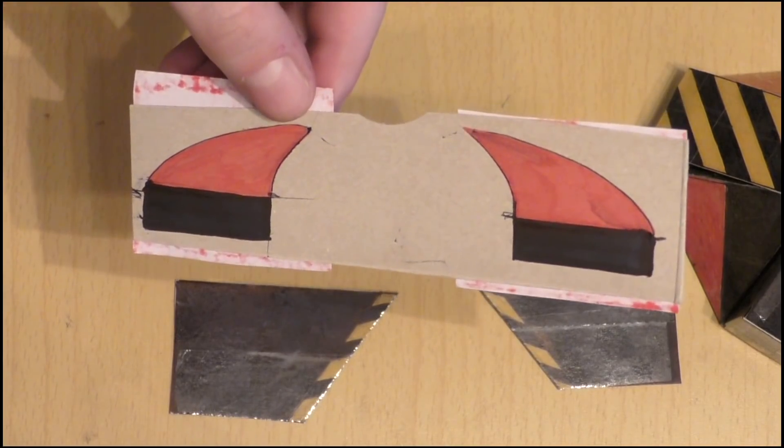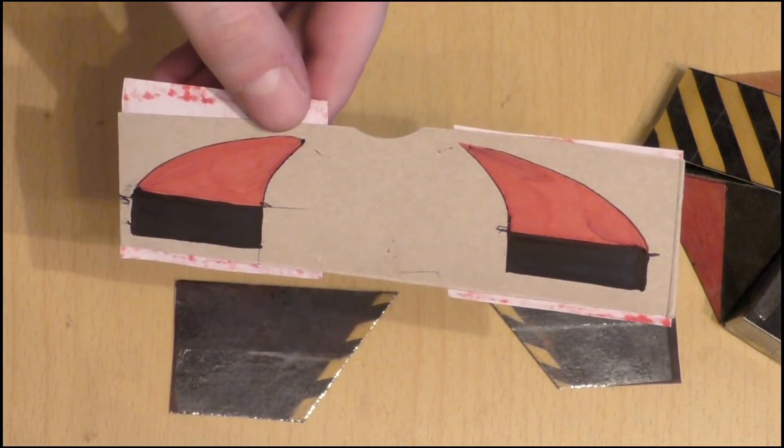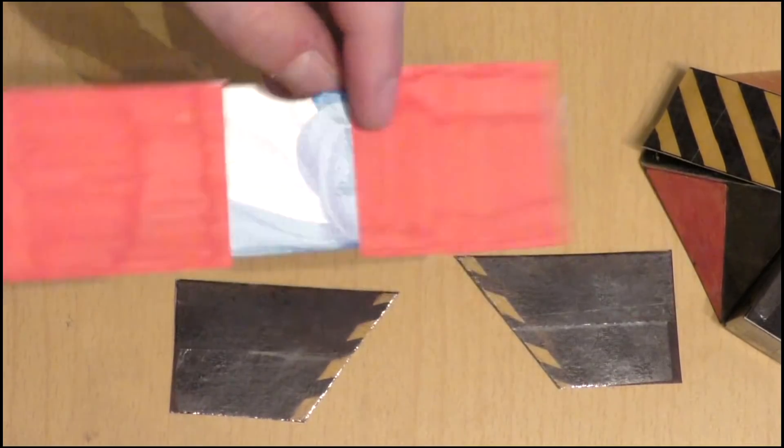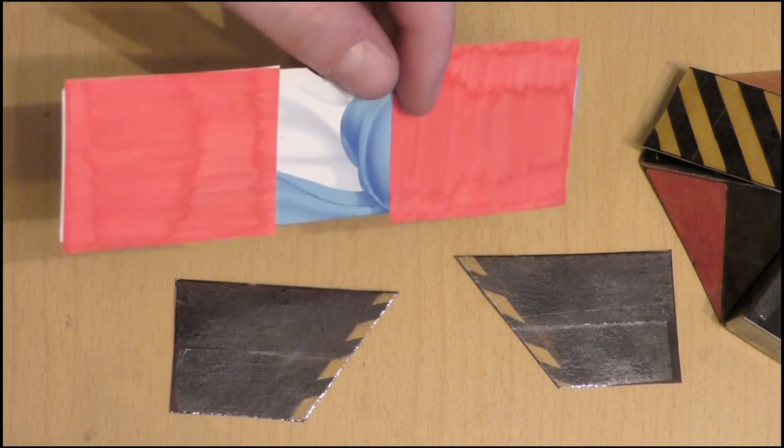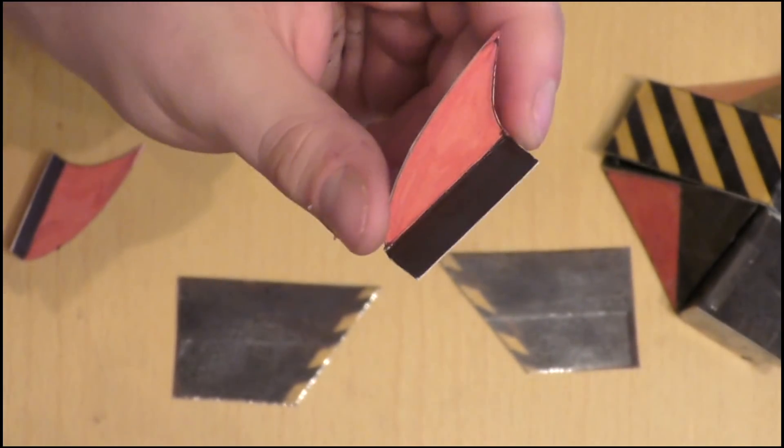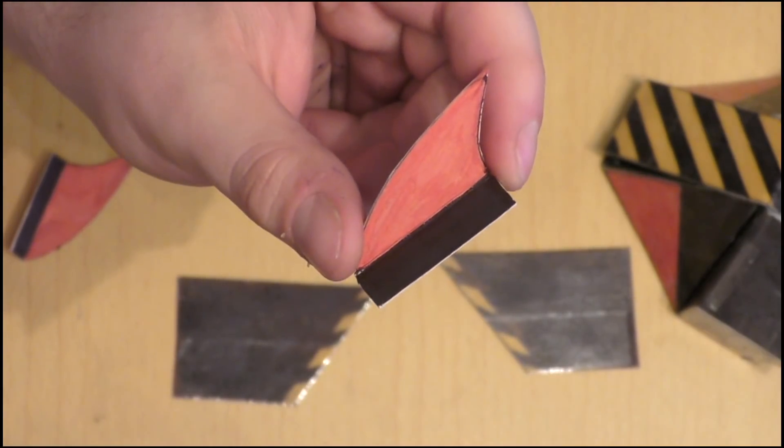Now it's time to add some decorations, starting with the red fins, which can be drawn onto the card with some black sections added to the bottom. While on the underside, some paper can be glued on and also colored in red. Once they have been cut out, fold the black sections at a 90-degree angle, which will help you to attach them to the model.